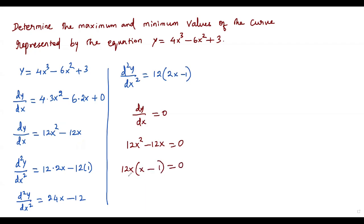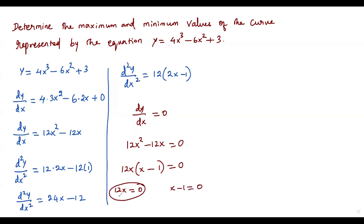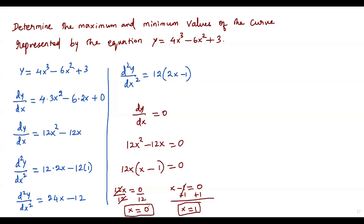We can verify the factoring: 12x times x gives 12x², and 12x times negative 1 gives negative 12x. Since the product equals zero, either 12x equals zero or (x minus 1) equals zero. Dividing by 12 gives x equals 0, and adding 1 to the other equation gives x equals 1. So equating the first derivative to zero gives two critical numbers: x equals 0 and x equals 1.